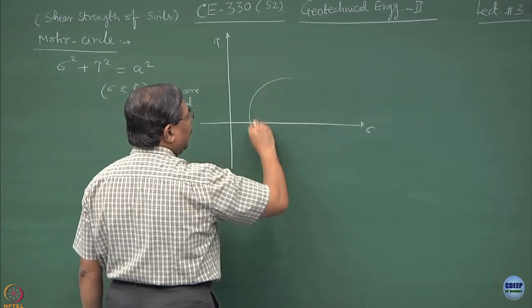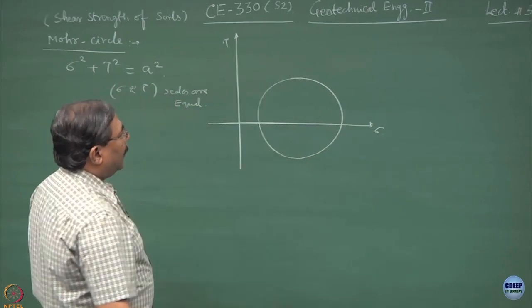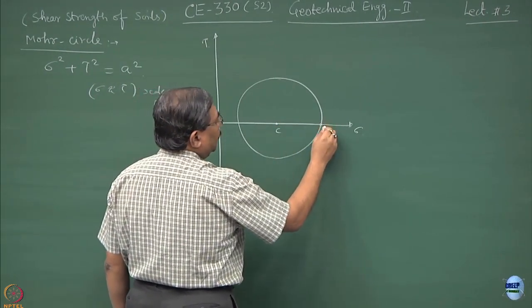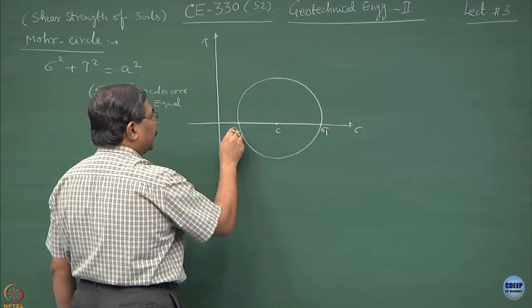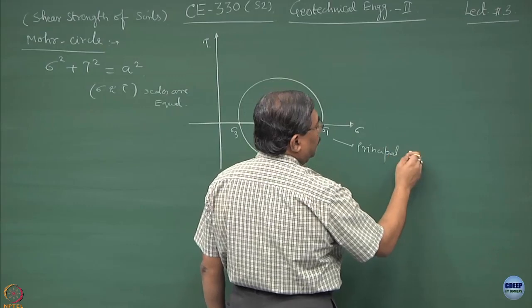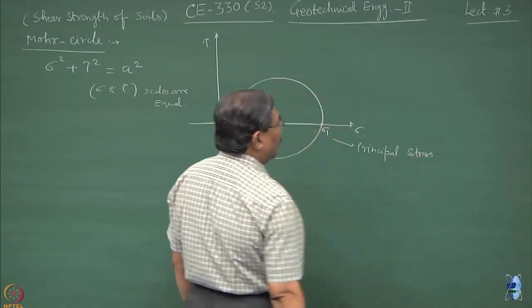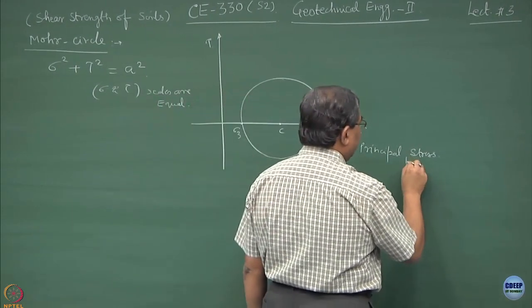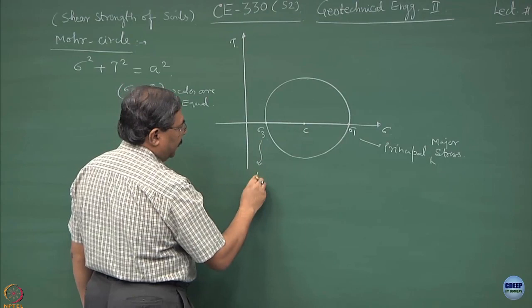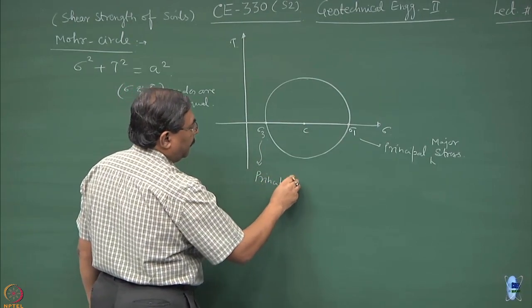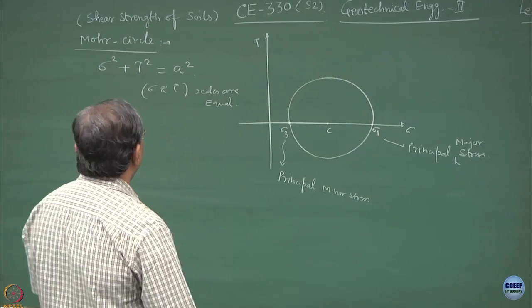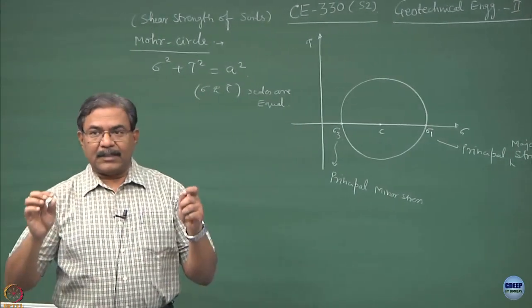This is the circle which you get, and as we discussed in the previous lecture, this is the center of the circle. This is what is known as sigma 1 and this is sigma 3. We call sigma 1 the principal major stress. In short, this Mohr circle defines the state of the material at which the system remains in equilibrium.